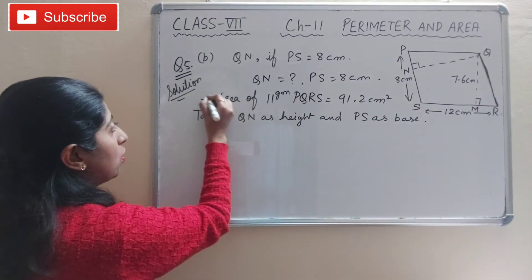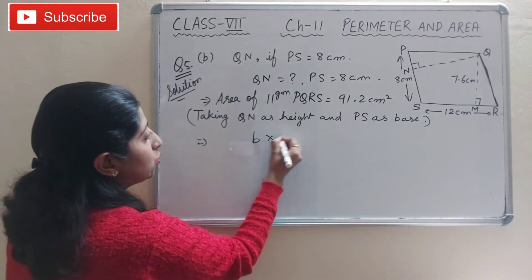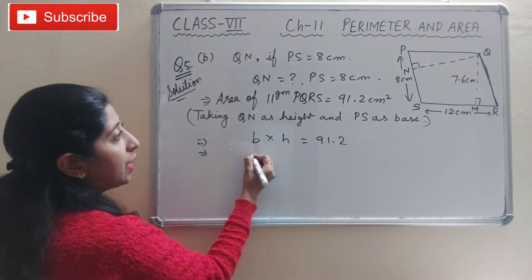From here we can write: base into height is equal to 91.2 cm square.